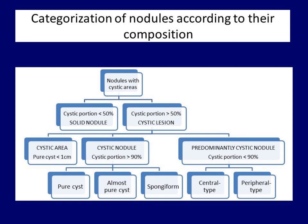Most guidelines do not mention a very important consideration. A purely cystic lesion less than one centimeter in maximal diameter is a normal finding in a healthy thyroid. These lesions correspond to dilated micro follicles and the term nodule for such areas should be avoided. Otherwise, we create thyroid patients from almost every human being. So there are cystic areas and cystic nodules.